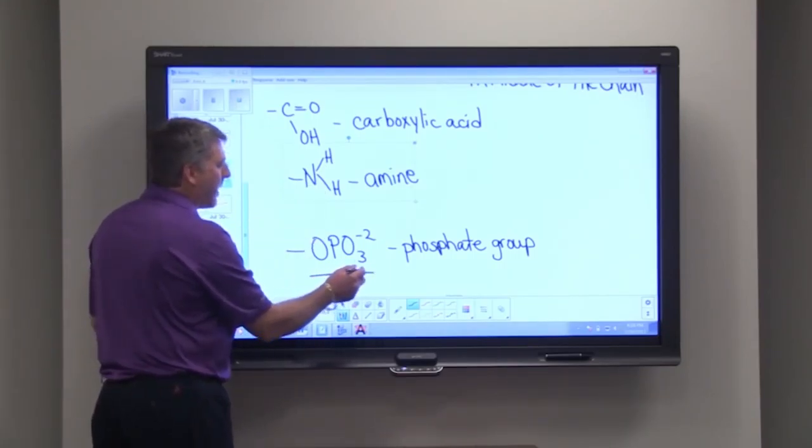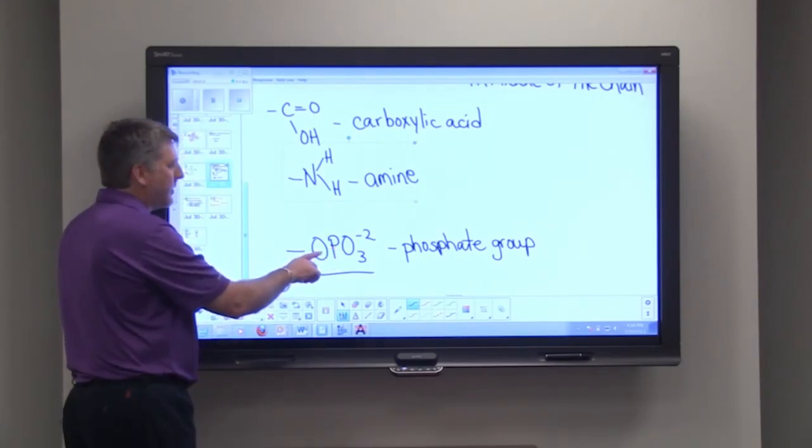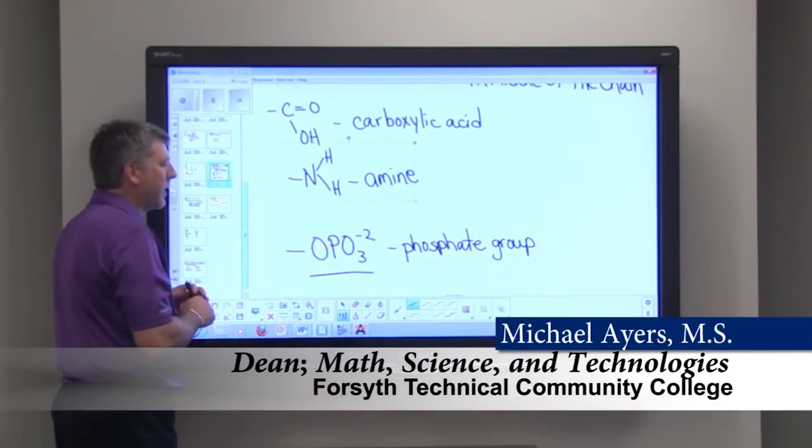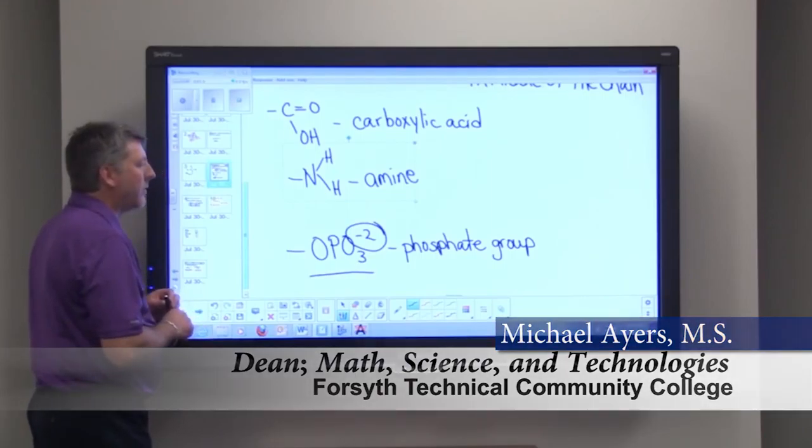And then we have a phosphate group, and the phosphate group is an oxygen with a phosphate or phosphorus and three oxygen attached, and you see that carries a charge of negative two.